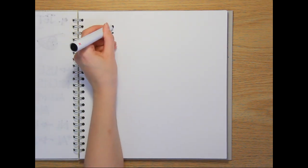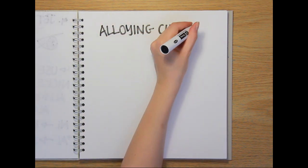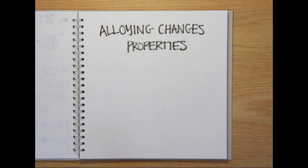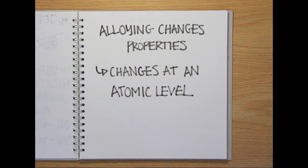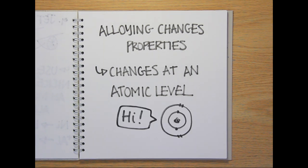But why should adding a small amount of another element alter the properties of a metal so dramatically? It's all down to changes that happen between the atoms in the alloy. To see why adding aluminum to nickel makes this alloy stronger, let's take a look at what happens on an atomic level.